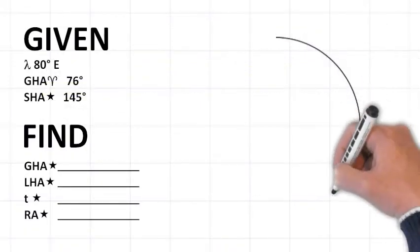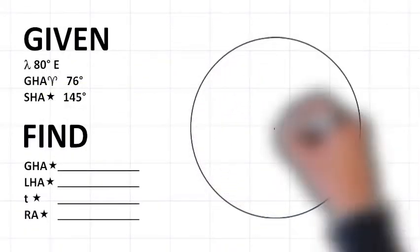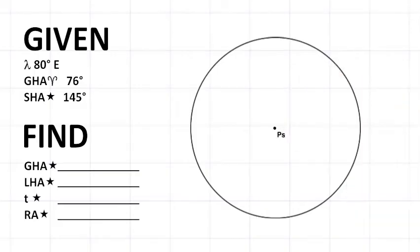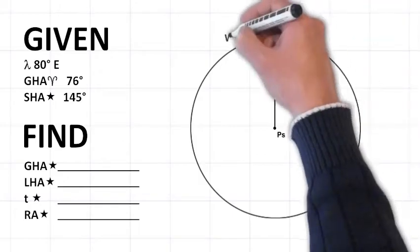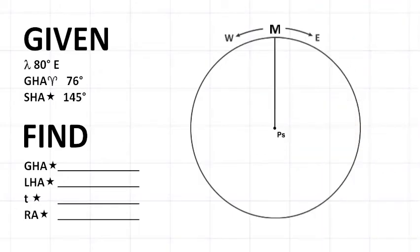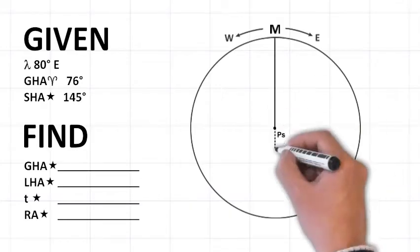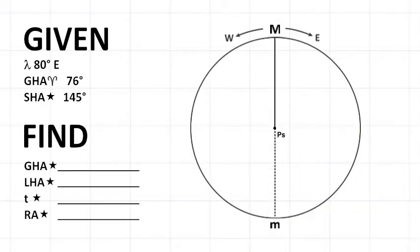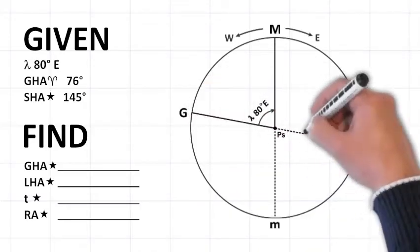Start by scribing a circle to represent the celestial equator. Label the center of the circle PS to represent the celestial south pole. Draw the upper branch of your local celestial meridian from the center to the top of the circle and label it uppercase M. Draw a dashed line from the center to the bottom of the circle to represent the lower branch of the local celestial meridian and label it lowercase m. Now place the Greenwich celestial meridian on the time diagram relative to the observer's meridian. Since the observer's longitude is 80 degrees east of Greenwich, put G 80 degrees west of the local celestial meridian.